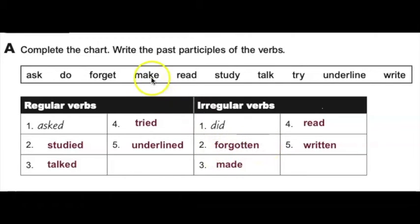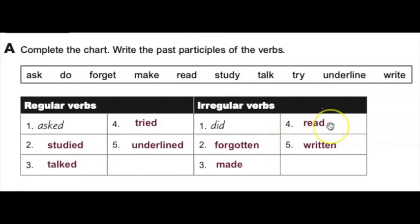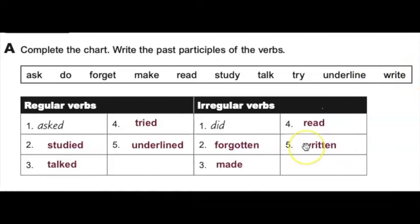Number three, make becomes made. Number four, read becomes read — it's spelled exactly the same but it's pronounced differently: I have read the story. And number five, write becomes written. The simple past would be wrote but the past participle is written.